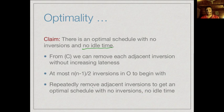Any two schedules with no inversions and no idle time must be equivalent in terms of lateness. Therefore our schedule A — which has no inversions and no idle time — has the same lateness as the transformed version of O. Since the transformed O has the same lateness as O itself and O was optimal, our solution A is also optimal.